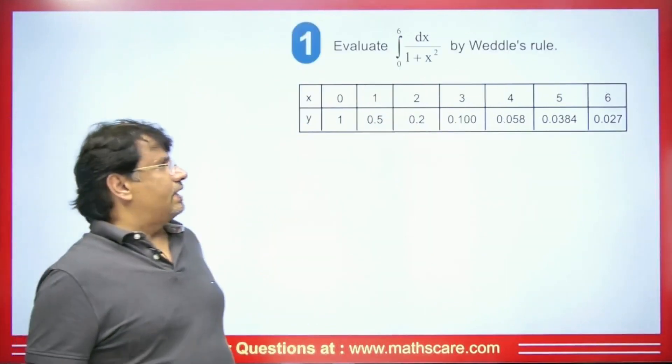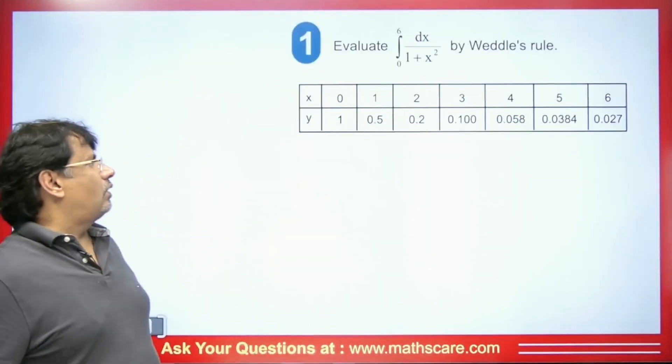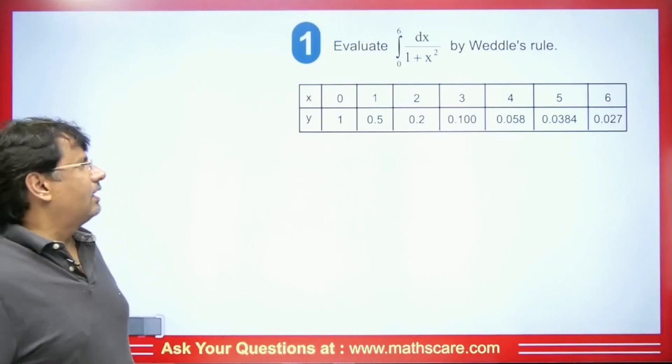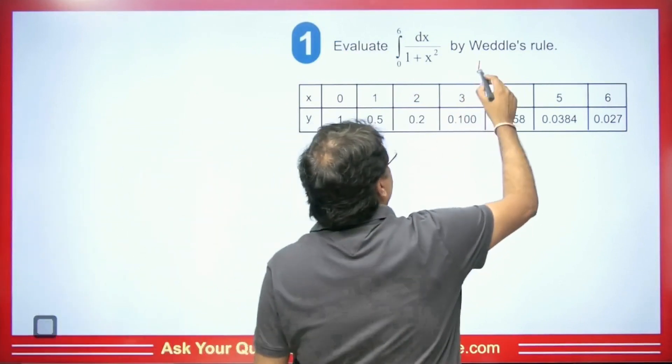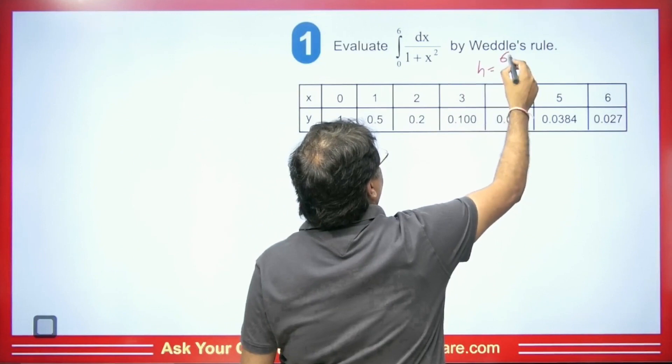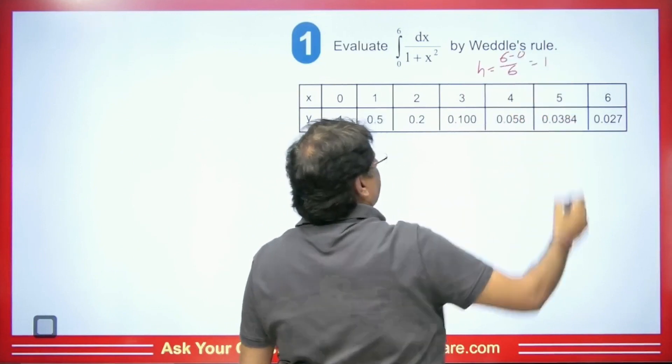Next, this is ∫₀⁶ dx/(1+x²). You are asked to evaluate its value using Weddle's rule. First, we have to find the value of h. What is h? The upper limit minus lower limit divided by 6. So this will be 1.